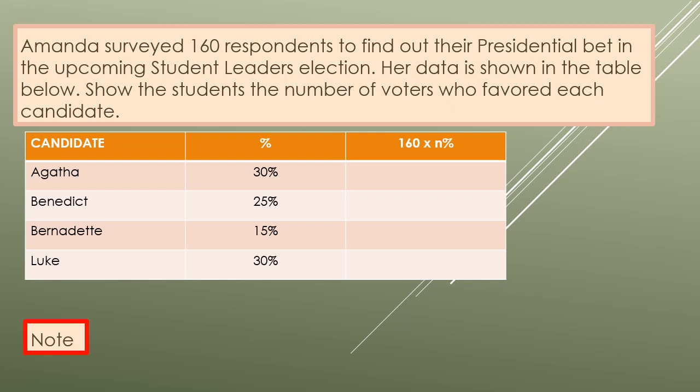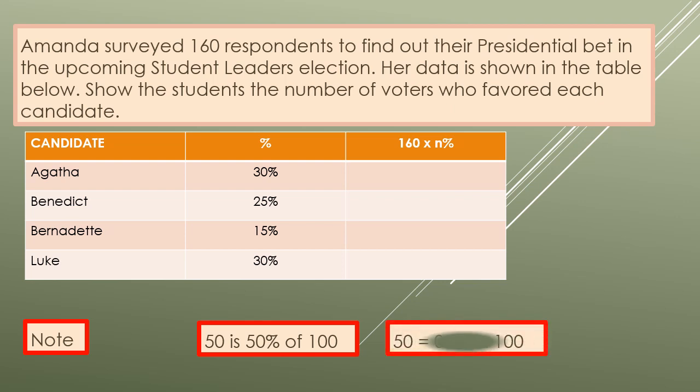For our next problem, Amanda surveyed 160 respondents to find out their presidential bet in the upcoming student leaders election. Her data is shown in the table below. Show the students the number of voters who favored each candidate. I have here a note which I always remember: 50 is 50 percent of 100. So 50 is half of 100. When you hear 50 percent, you know that's one half. So if we put it in an equation, 50 equals 0.5 times 100. So 0.5 is also equal to 0.50. When you convert percent to decimal, remove the percent sign and place the decimal point after two digits.